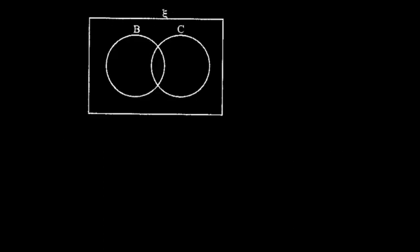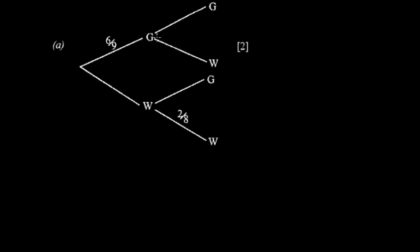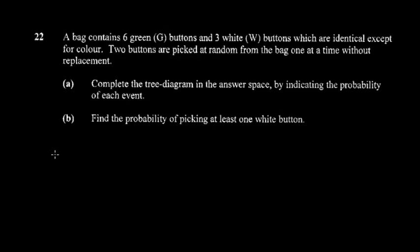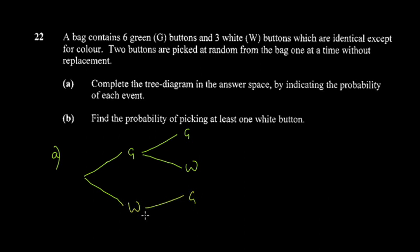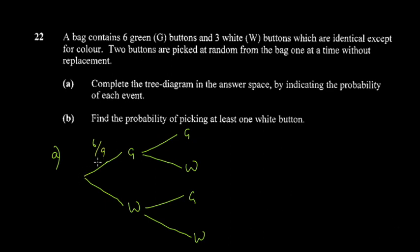Let's do one more question. A bag contains six green buttons and three white buttons, identical except for color. Two buttons are picked at random without replacement. They use G for green and W for white. The tree diagram has a first pick of green or white, then second picks of green or white for each branch.